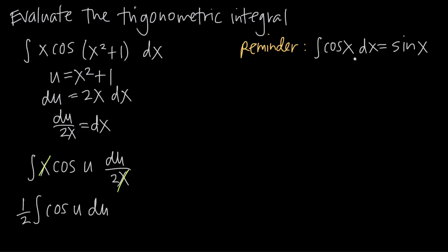And now here's where our formula comes in. We know that the integral of cosine of x is sine of x, which means that the integral of cosine of u is going to be sine of u. So what we end up with is 1 half times sine of u. And then we want to go ahead and add c to account for the constant of integration.